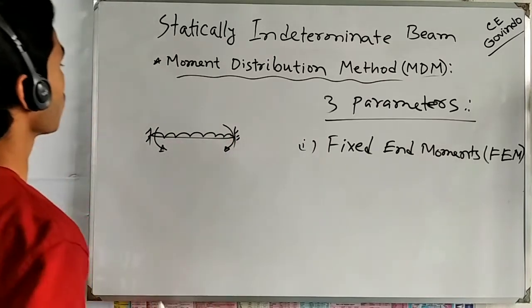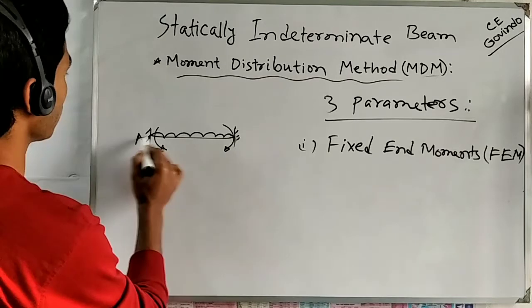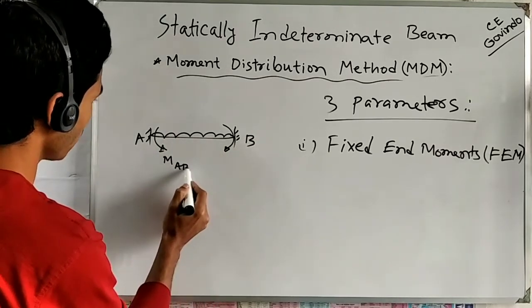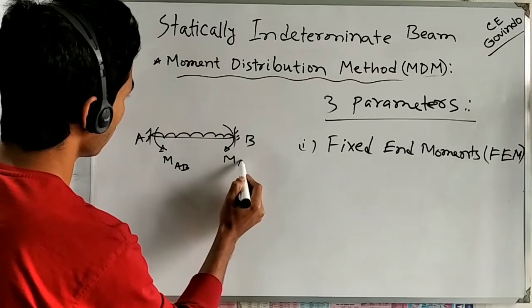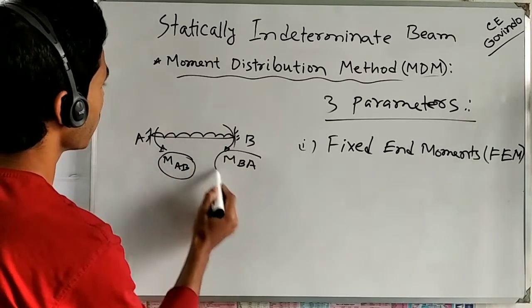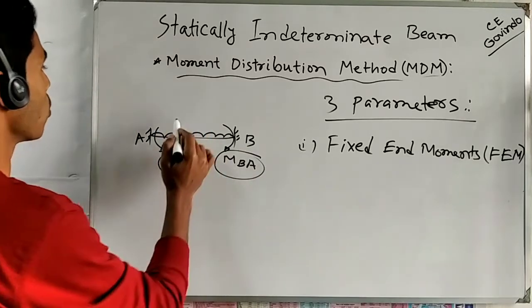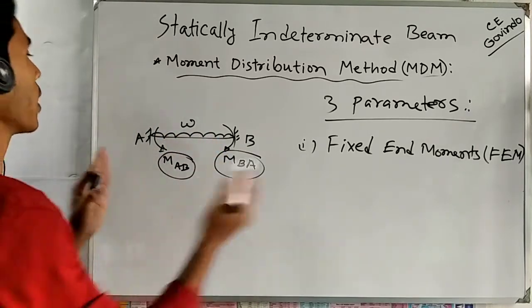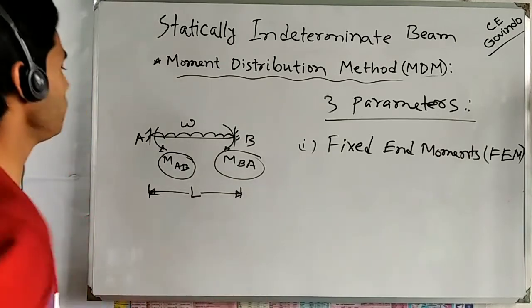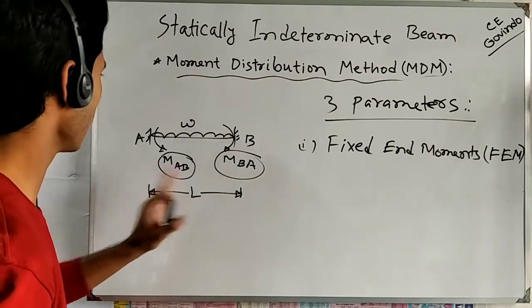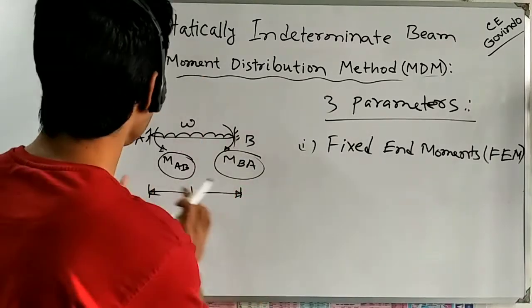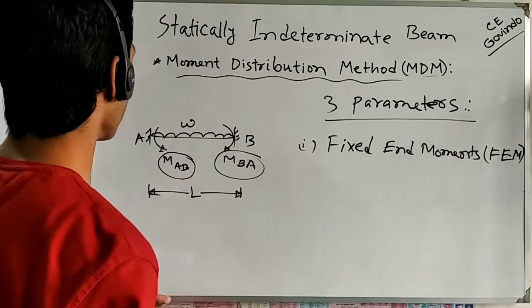The moment at end A is called M-AB and the moment at end B is called M-BA. These two moments M-AB and M-BA caused by the applied load — omega W per unit length over span length L — are called Fixed End Moments. We can find these Fixed End Moments using different formulas.